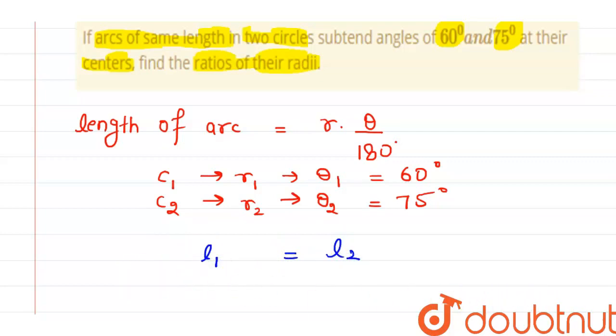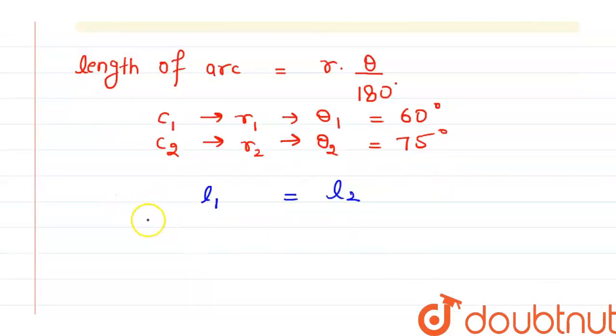From here, we can write R1 theta 1 by 180 degrees equals R2 theta 2 by 180 degrees. From here, this 180 and this 180 will get cancelled, and R1 by R2 will be theta 2 by theta 1.